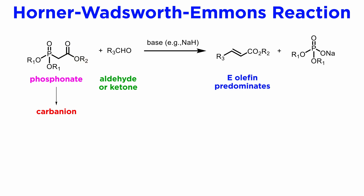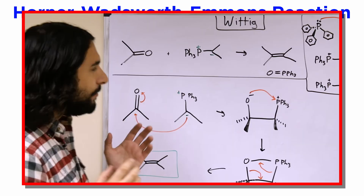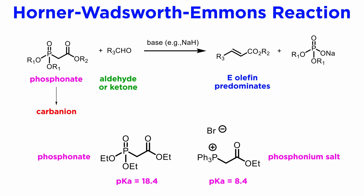As a general rule, the olefin produced is predominantly E. The reaction somewhat resembles the Wittig reaction, which we learned about much earlier in the series, in that a phosphorus-based group was used to stabilize the negative charge on the carbanion. But this resemblance is only superficial.